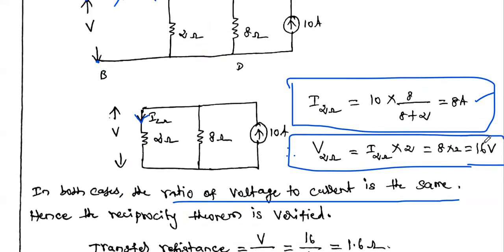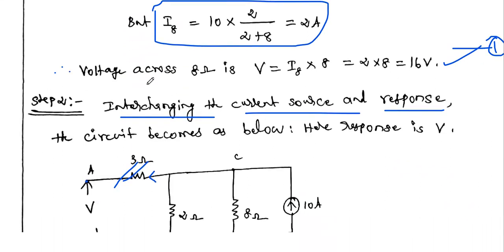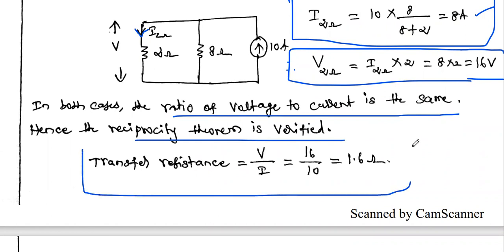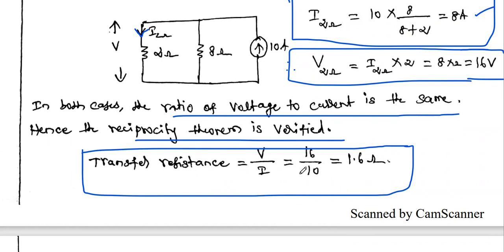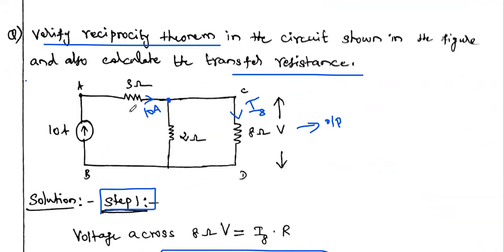In both cases, the ratio of voltage to current is the same: 16 volts divided by 10 amps = 1.6. In the first case the ratio V/i = 16/10 = 1.6, and in the second case also 1.6. Hence the reciprocity theorem is verified. The transfer resistance is V divided by i = 16/10 = 1.6 ohms.